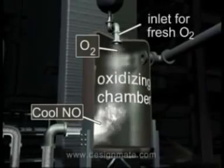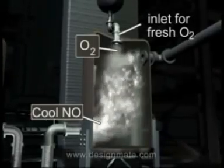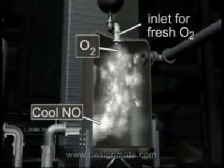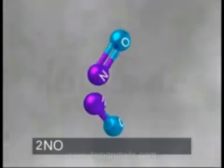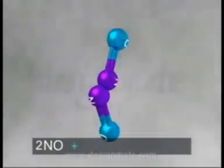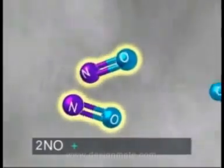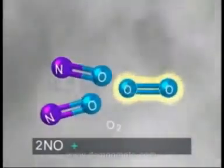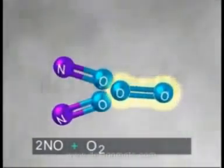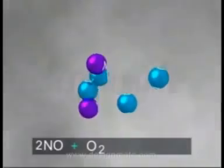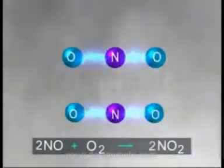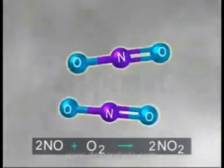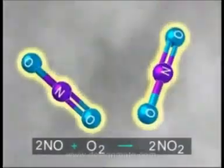The oxidizing chamber has an inlet for fresh oxygen. Here, nitric oxide combines with oxygen to form nitrogen dioxide: 2NO + O₂ → 2NO₂.